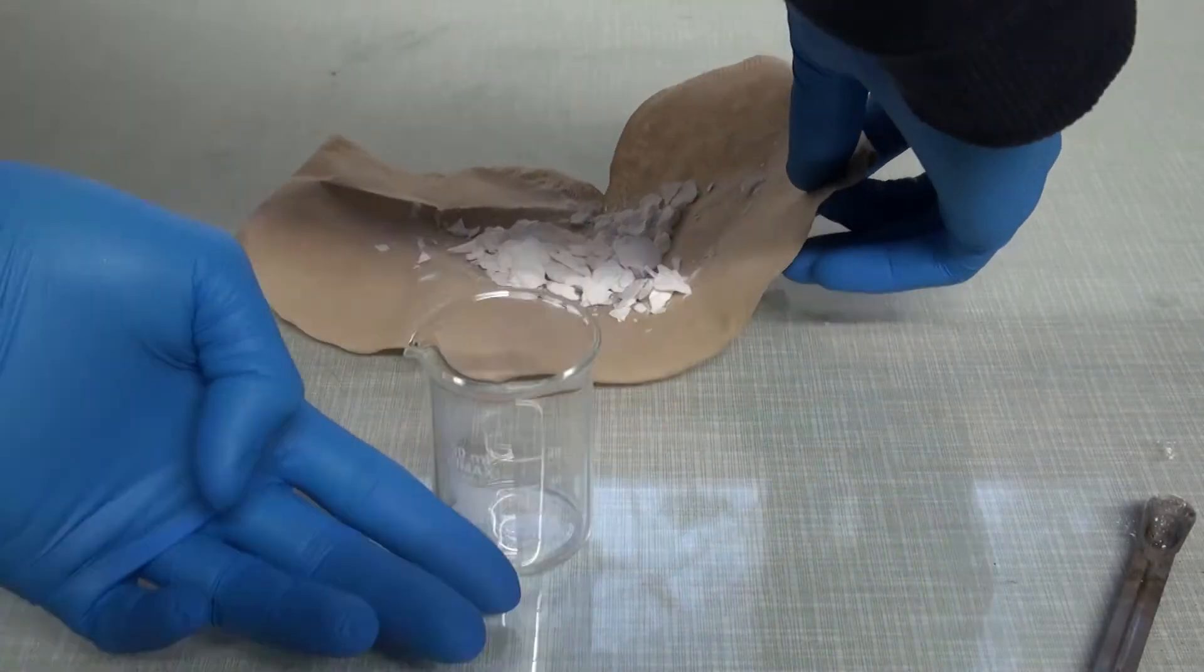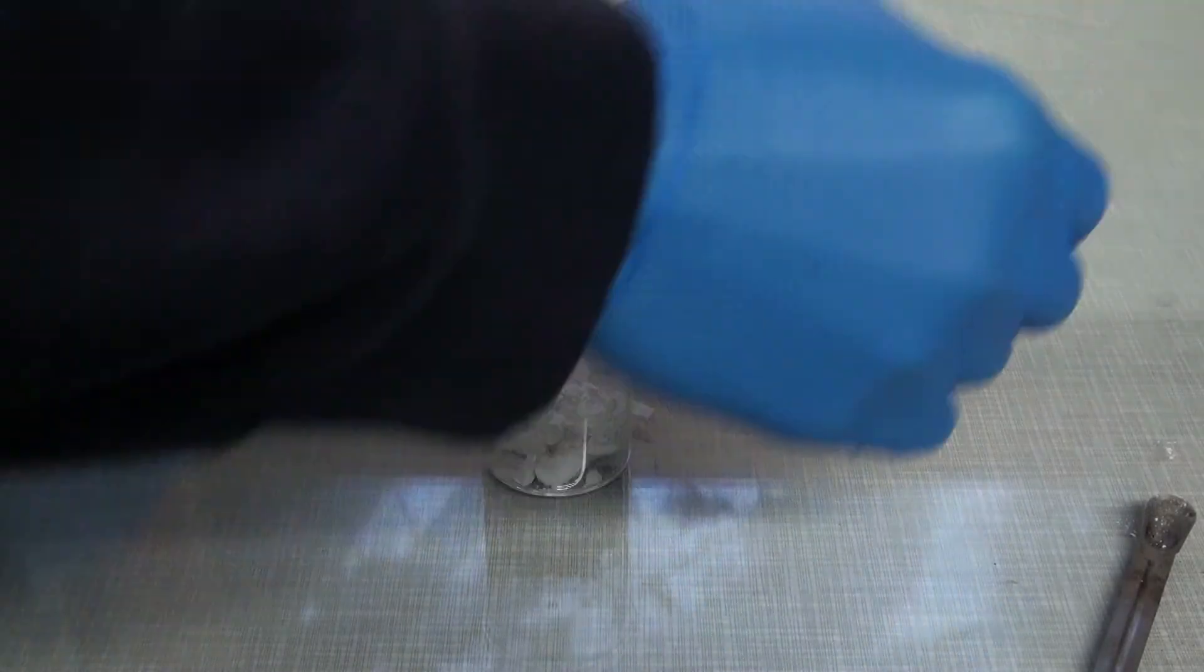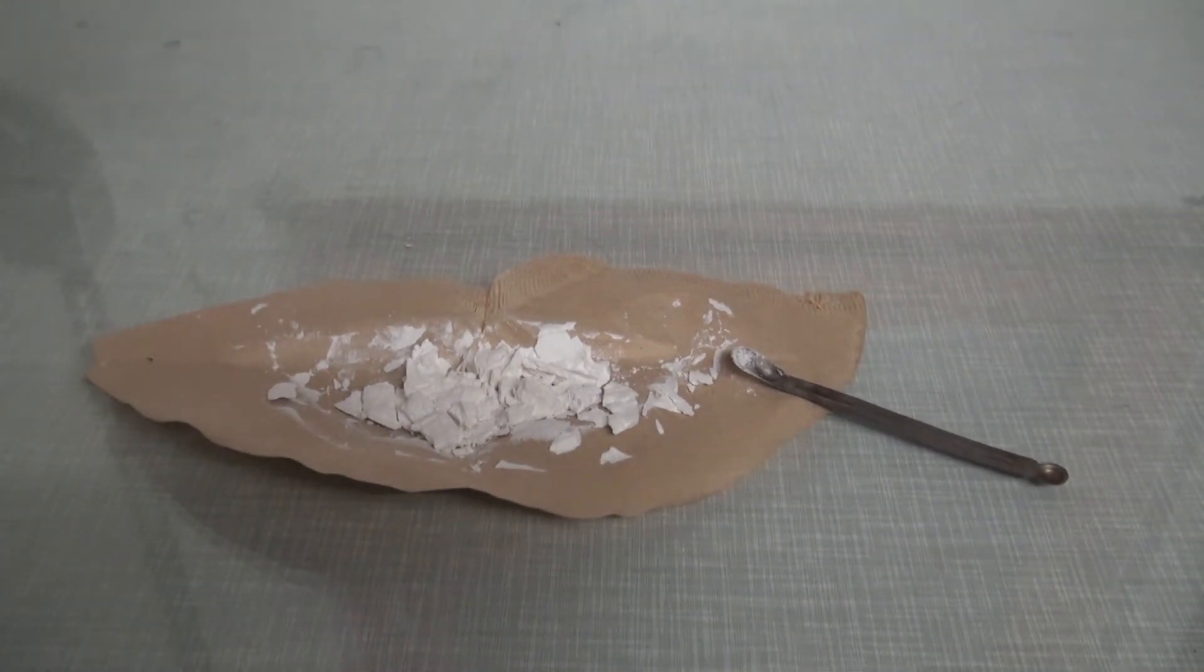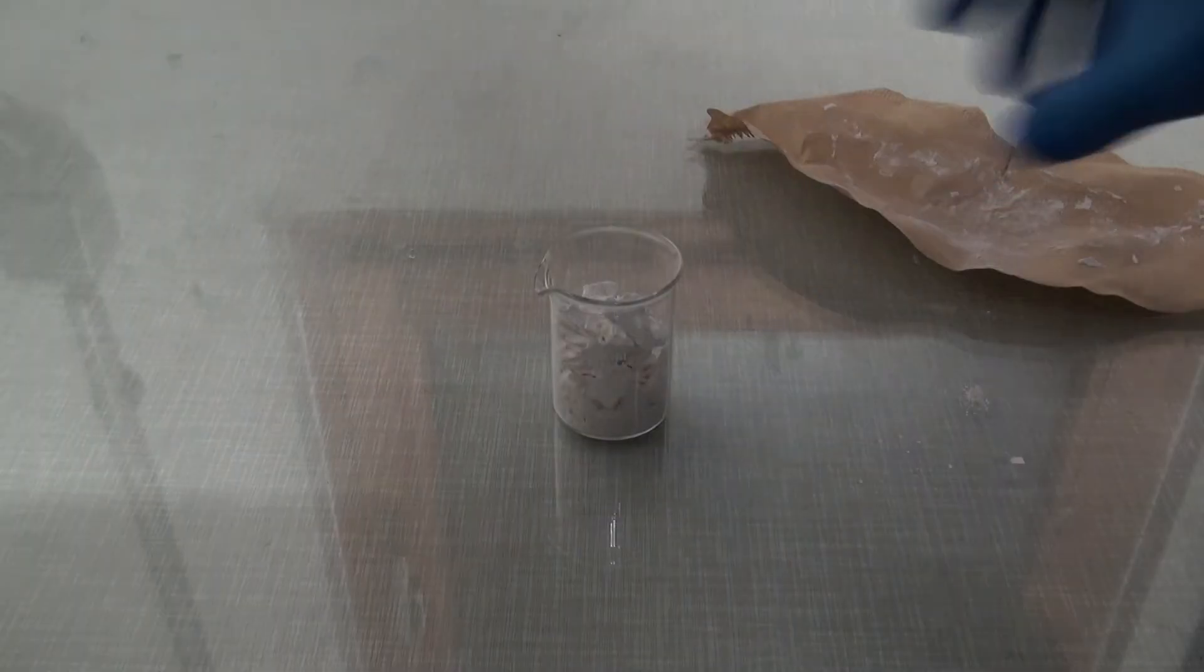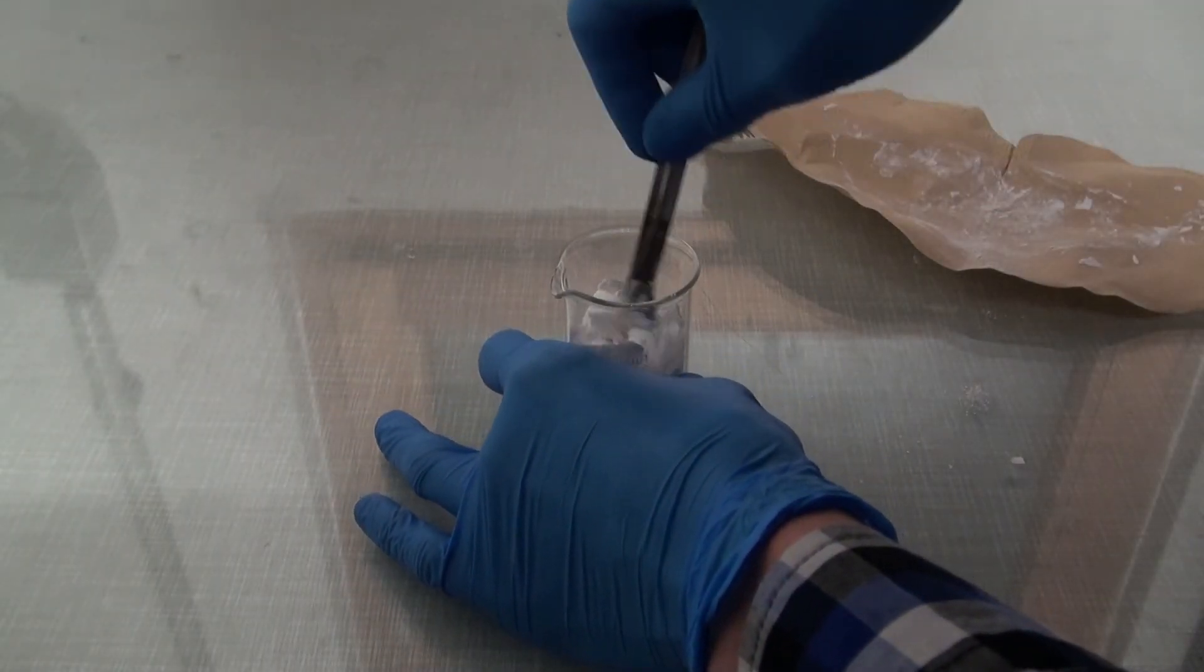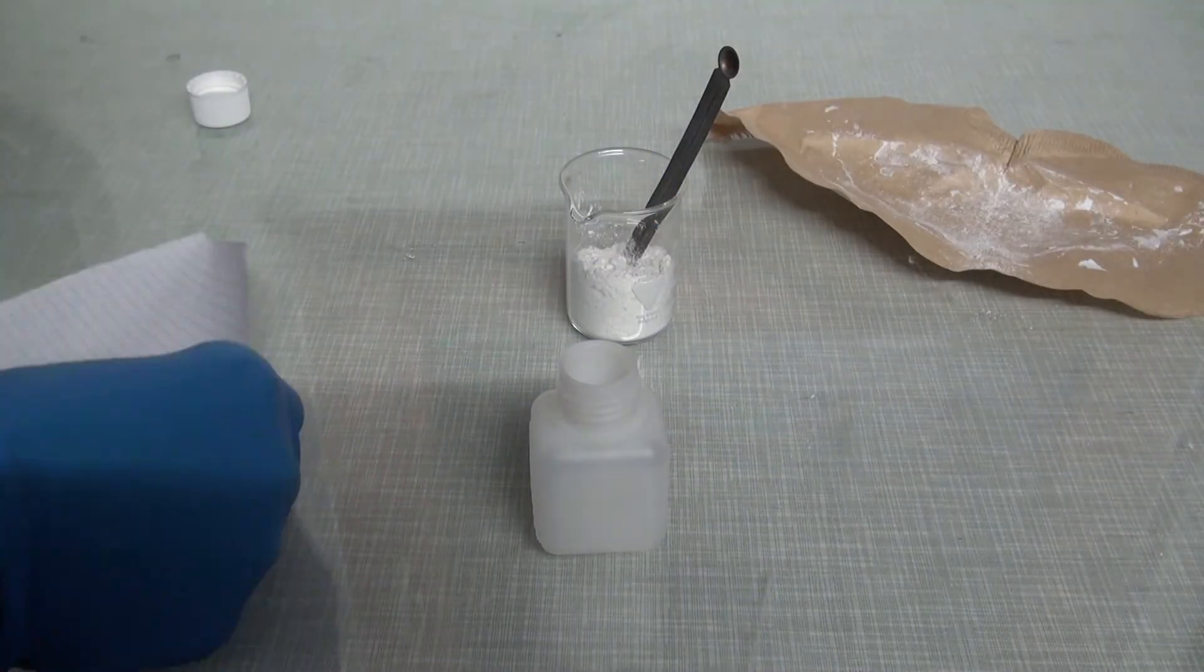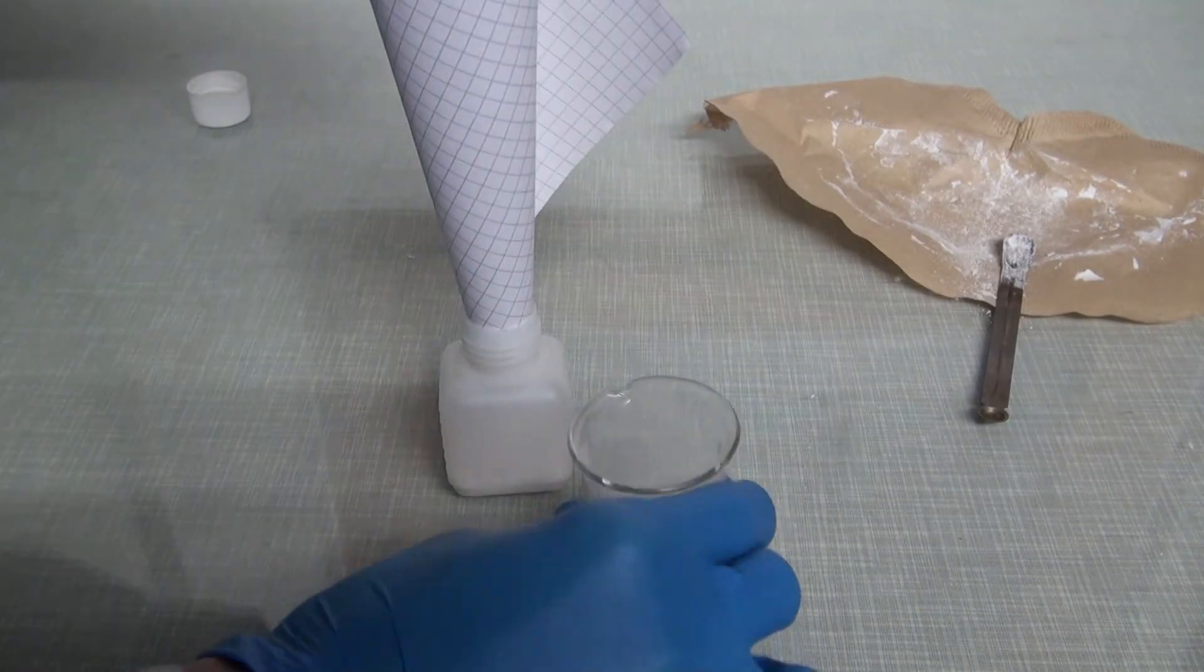The precipitate was filtered and dried. The oxidation was repeated one more time with a similar result and the product was combined with the result of the first one. It was transferred into a storage container and labeled.